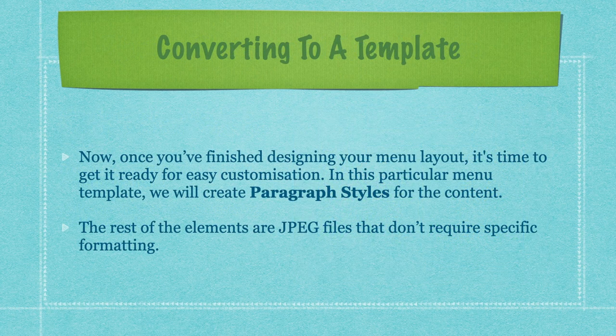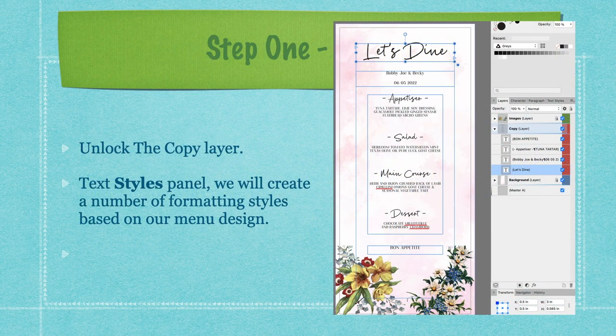Once you've finished designing your menu, it's time to get it ready for easy customization. We'll create paragraph styles for the content. The floral JPEG elements don't require specific formatting. Unlock the copy layer, open the text styles panel — you can see it on the right-hand side of the panels display. Select the 'Let's Dine' text, and we will create formatting styles based on our menu design.